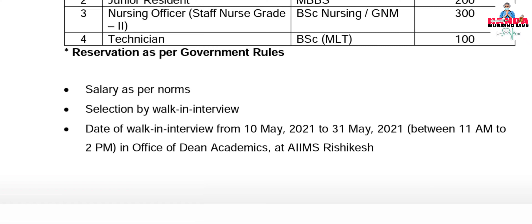As per the advertisement from AIIMS Delhi, the pay for AMCDC Case may be around ₹28,000 per month for the Nursing Officer post. Selection will be by walk-in interview, with dates from 10th May 2021 to 31st May 2021, between 11 a.m. and 2 p.m.